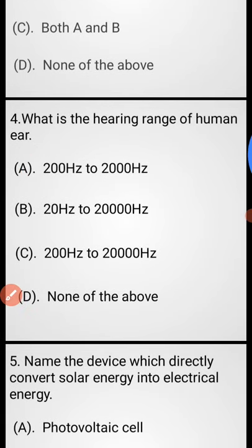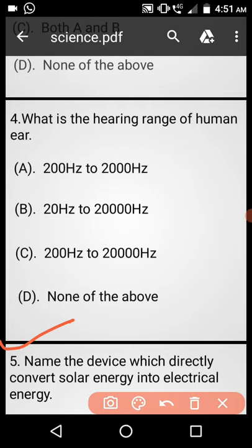Question number 4: What is the hearing range of human ear? Option A: 200 Hz to 2000 Hz, Option B: 20 Hz to 20,000 Hz, Option C: 200 Hz to 20,000 Hz, Option D: None of these. Answer is not above, answer is Option B.